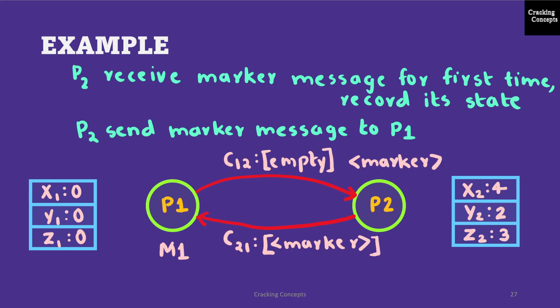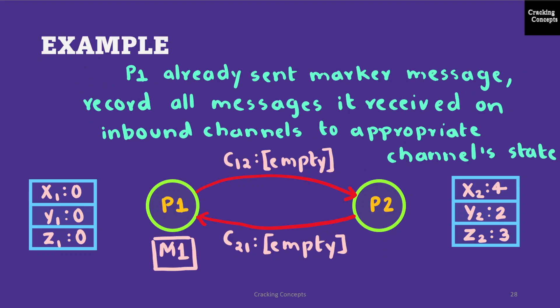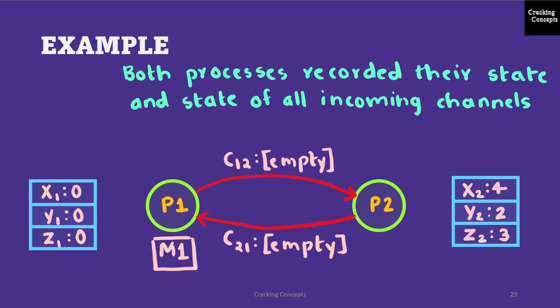When P2 receives the marker for the first time, it records its own state — shown by writing the marker message over the process. P2 then sends a marker message back to P1. Since P1 has already sent the marker, it records all messages received on inbound channels to the appropriate channel state. The message sent by P2 to P1 is recorded under P1. Now both processes have recorded their states and the state of the incoming channels, giving us the final process states and channel states.